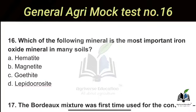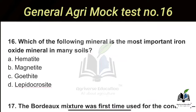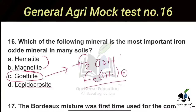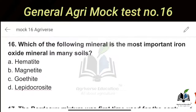The 16th question: Which of the following minerals is the most important iron oxide mineral in many soils? You may have heard of hematite and magnetite, but the right answer is Option C — Goethite. The formula for goethite is FeOOH. Goethite is the most abundantly found iron oxide mineral in soil.